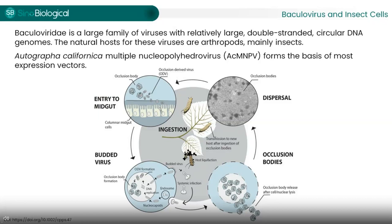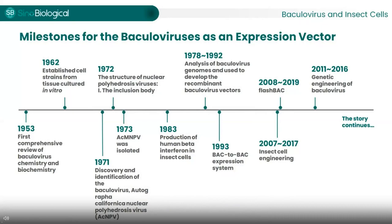The occlusion bodies persist stably in the environment, waiting for the next susceptible host. Our understanding of Baculovirus is derived from a long history of research. The topic was first reviewed in 1953. In 1971, AcMNPV was discovered. Virus particles were isolated in 1973. Subsequently, more information such as the virus structure, life cycle, genome map, and physiology was obtained.